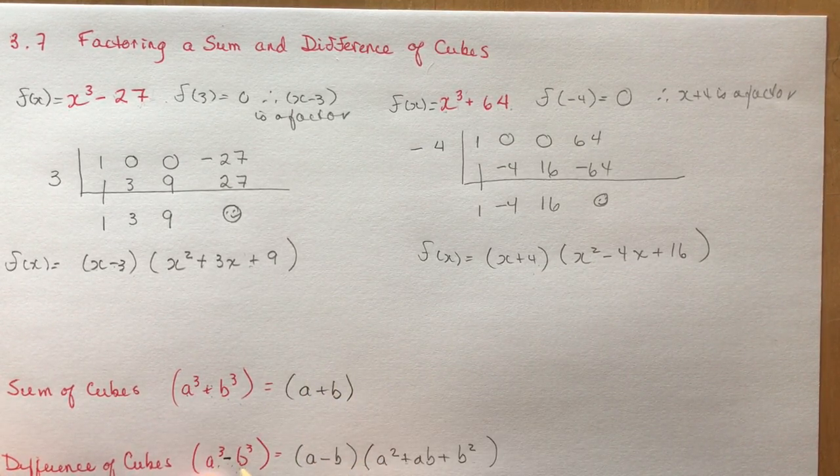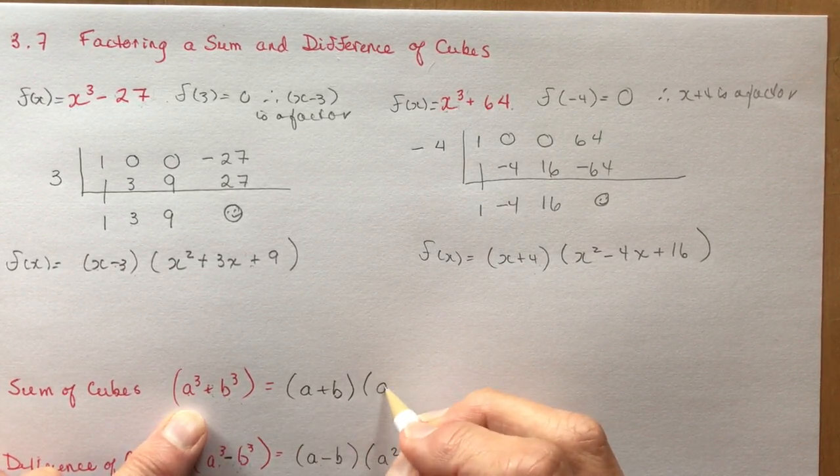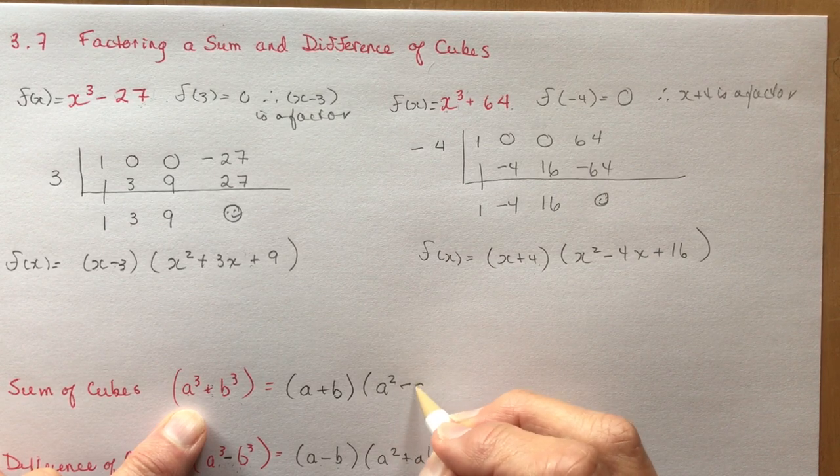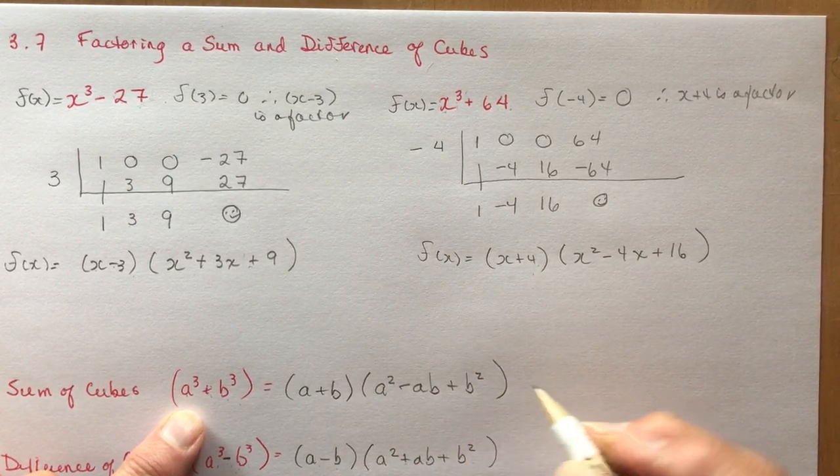So if this was a minus b, this is a minus b. a plus b, a plus b. And then you have a squared minus ab plus b squared. And those are your two formulas.